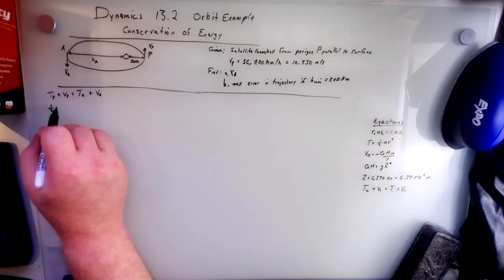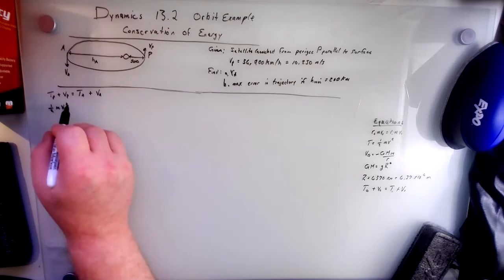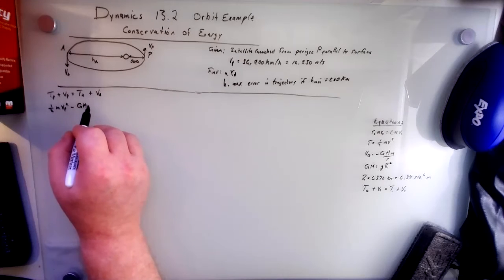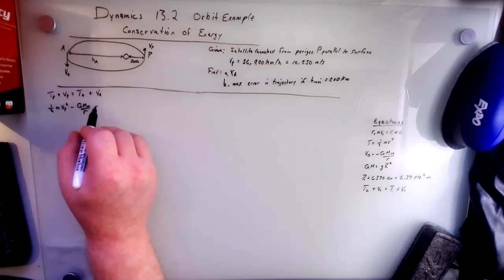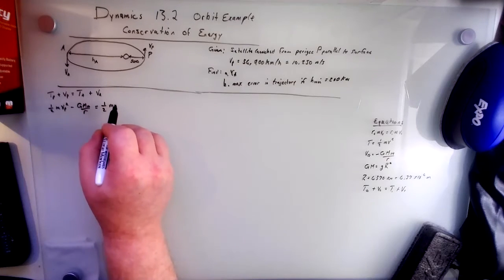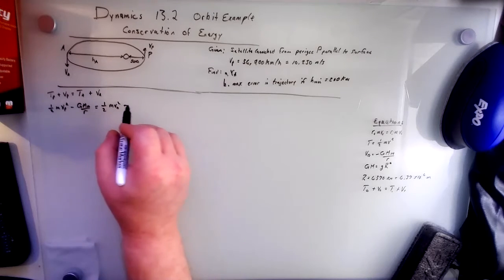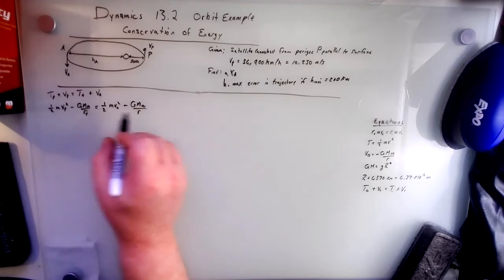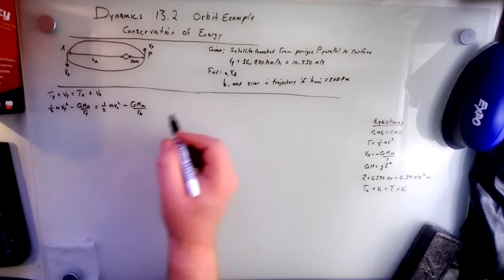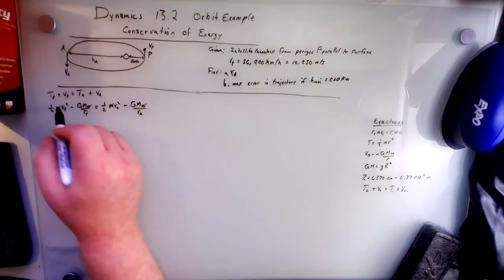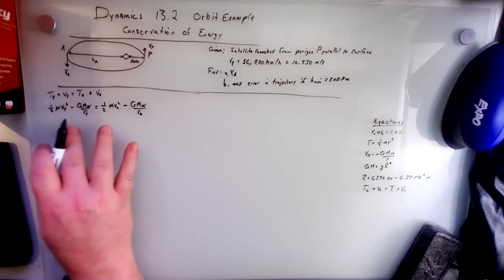So that's one half MvP squared minus GMm over RP equals one half MvA squared minus GMm over RA. This is our P, this is our A. The mass will cancel because there's a mass in every term, and we'll just collect like terms.